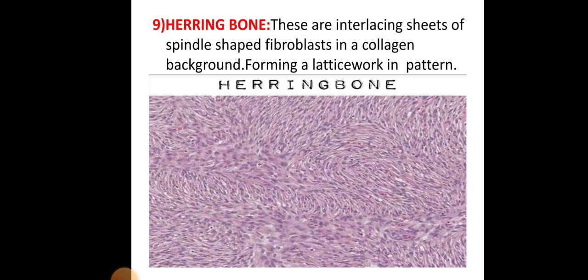The herringbone pattern consists of interlacing sheets of spindle-shaped fibroblasts in a collagen background, forming a latticework arrangement. This is most commonly seen in fibrosarcoma.